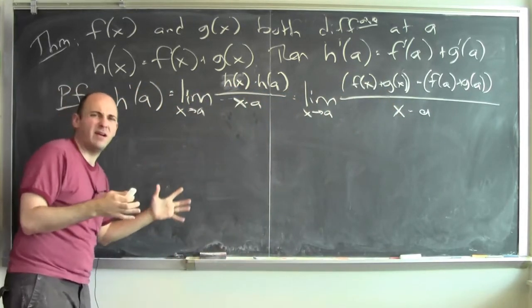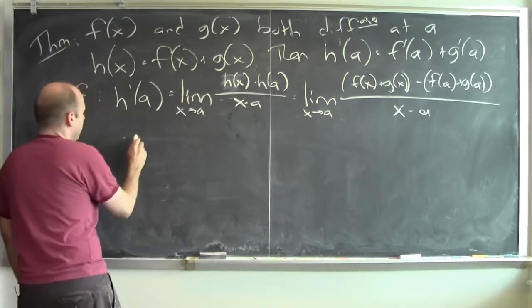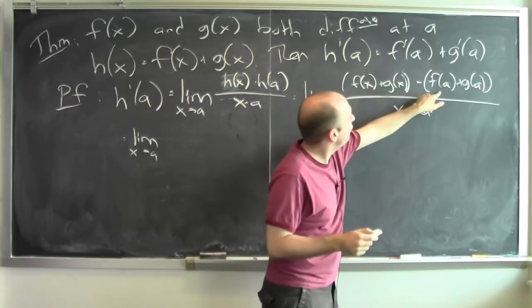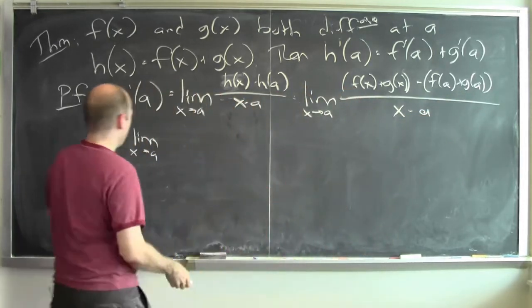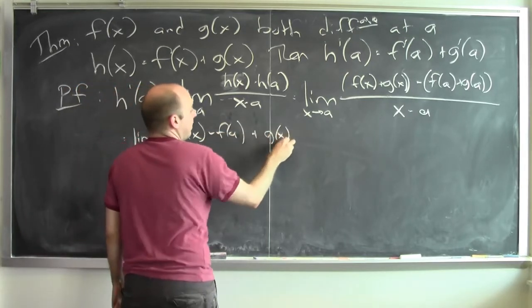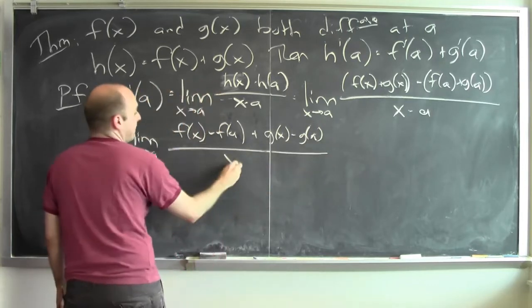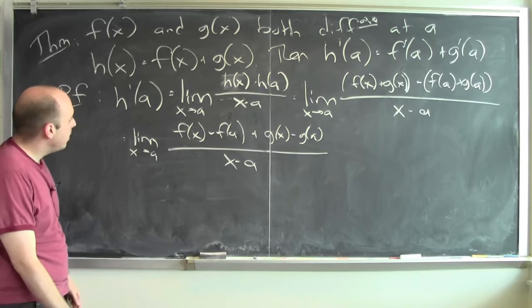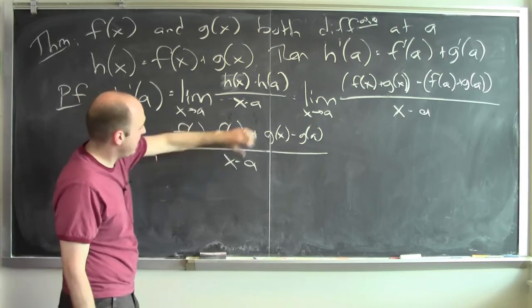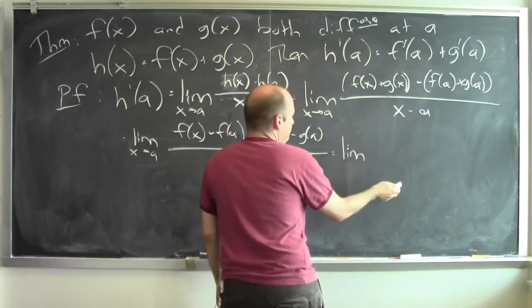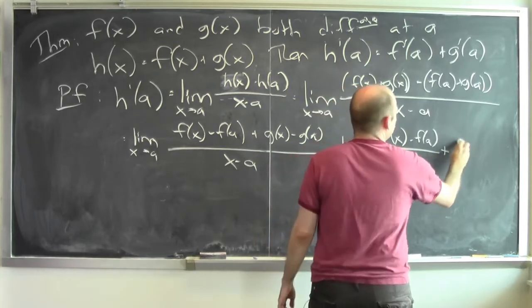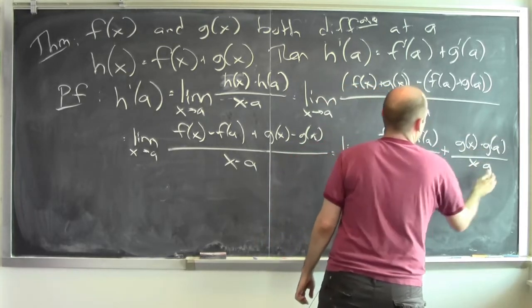Now I want to calculate that limit. I can rearrange the numerator: f of x plus g of x minus f of a minus g of a. So I can rearrange to get f of x minus f of a plus g of x minus g of a, all divided by x minus a. I can split this into two separate fractions: f of x minus f of a over x minus a, plus g of x minus g of a over x minus a.